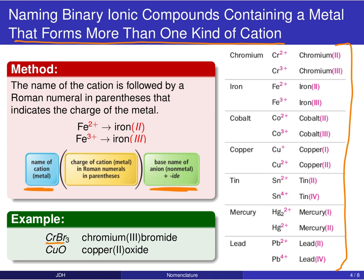For example, CrBr3: we know that each bromine contributes a −1 charge, so with three of them, in order for chromium bromide to be a neutral compound, the three Br− ions must be canceled out by a single Cr3+. We denote that by writing chromium with a Roman numeral III in parentheses.